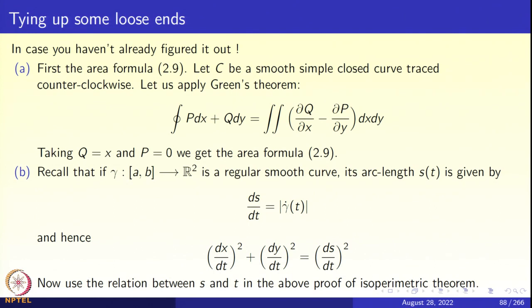Let us recall Green's theorem. The statement: integral over the curve C of p dx + q dy equals the double integral of (∂q/∂x − ∂p/∂y) dx dy over the interior of the curve. Now take q = x and p = 0. Then the right-hand side gives the area enclosed by the curve, and the left-hand side gives ∫x dy, completing the area formula.